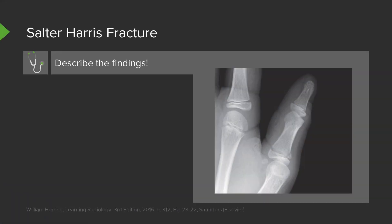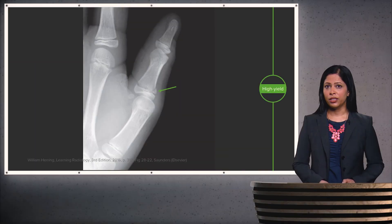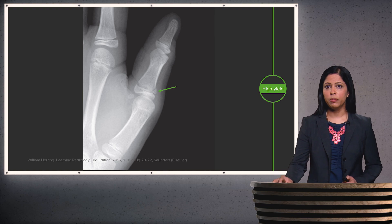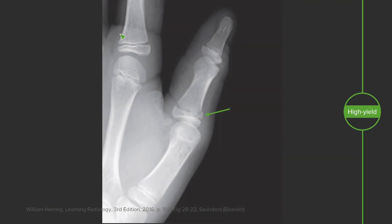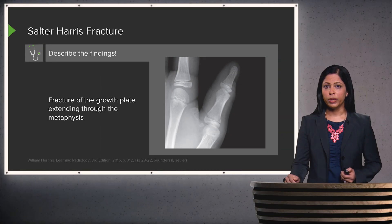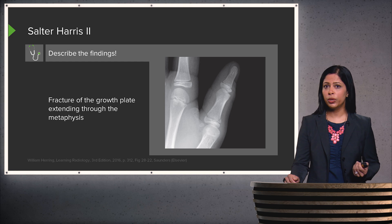Here is an x-ray of the first digit. The arrow points to the fracture. You can tell this is a skeletally immature patient because you can see the growth plates open in these bony structures. The growth plate is visible here, and this is the fracture. This is a fracture of the growth plate that extends through the metaphysis — a Salter-Harris type II fracture, which tends to have a pretty good prognosis and is the most common of the Salter-Harris fractures.